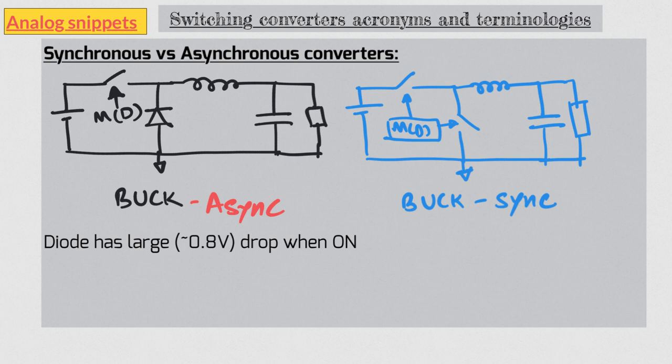Notice that now there is a distinct possibility that we can end up shorting supply and ground if both switches are on, and that is a very undesirable situation. That's because these switches are designed to be very low impedance switches. So now we need to synchronize the turning on and off of these switches, and hence the name synchronous converters. Notice that this shorting of supply and ground can never happen in asynchronous converters, so they are safe by architecture.